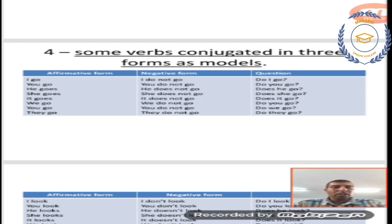Here we have two elements: do not or does not. Do not after I, we, you, they, but does not after he, she, and it. For questions, I make inversion between auxiliary verb with the subject, personal pronoun and main verb.